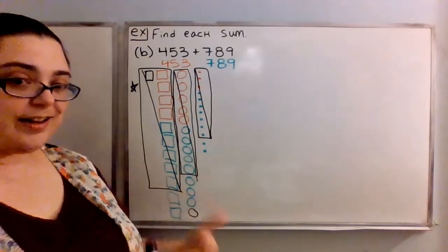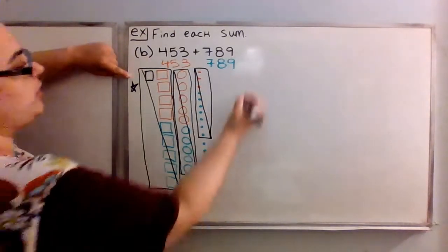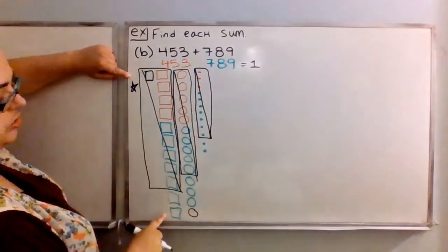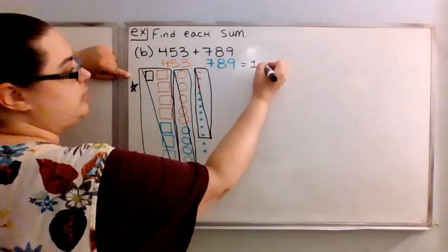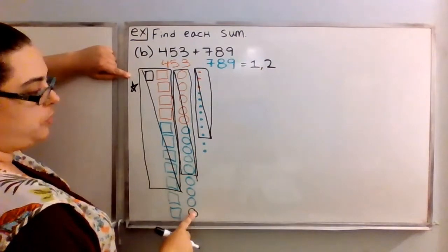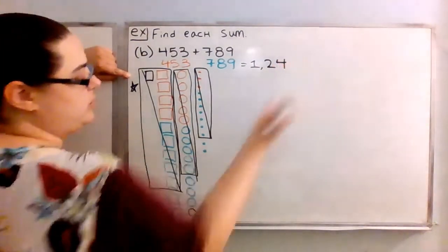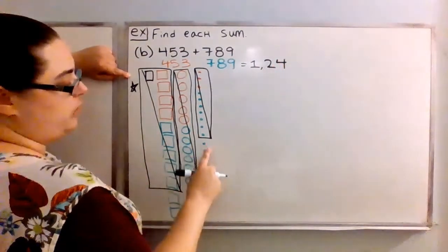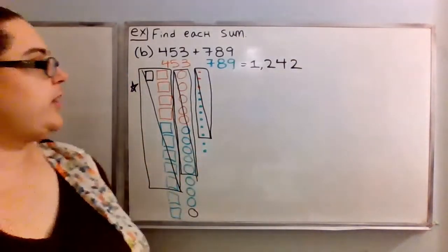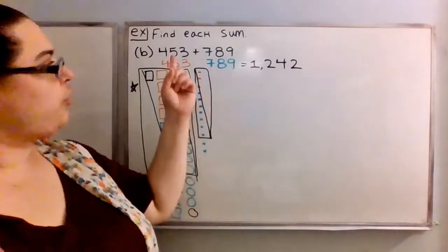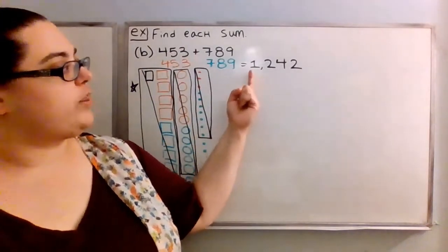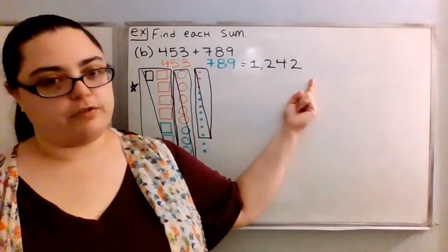Then we count the squares: 1, 2, 3, 4, 5, 6, 7, 8, 9, 10 squares. Now we have this unique situation where we didn't have any other shape, so I'm going to put a star here for the thousands — these 10 squares exchange for my next symbol up. Then I have two squares left. So at the end, I wound up with one star, two squares, four circles, and two dots — meaning 453 plus 789 gives us 1,242.